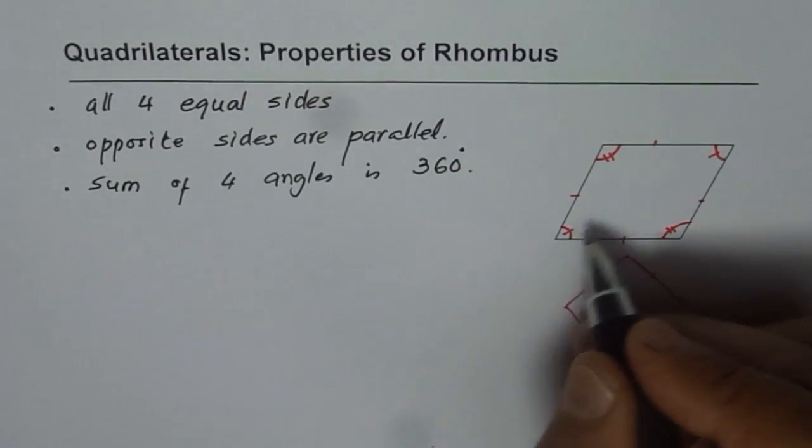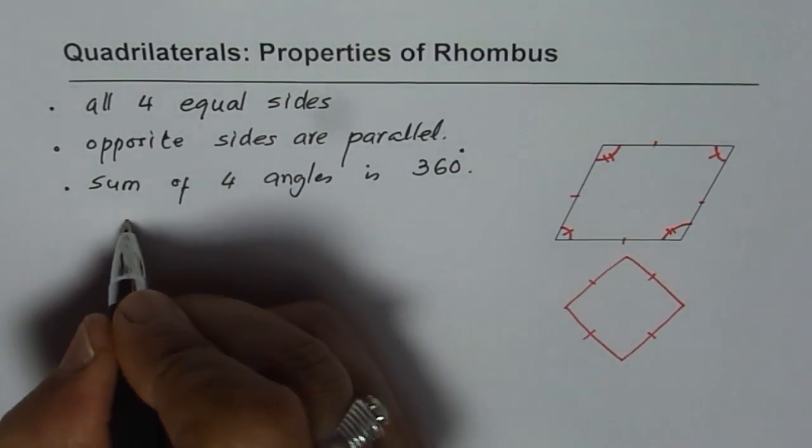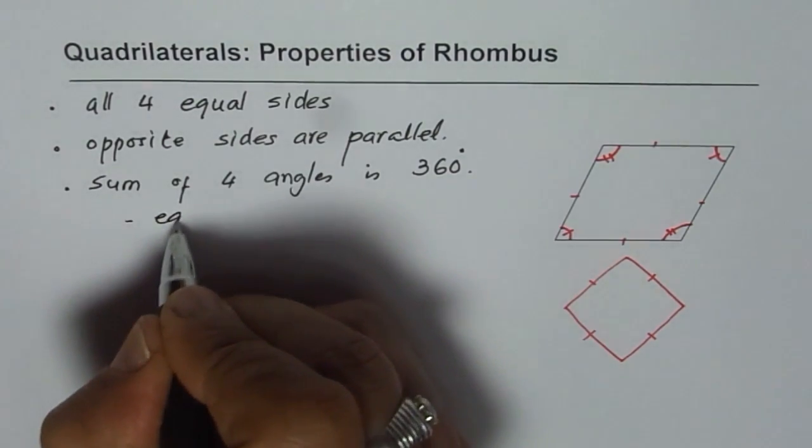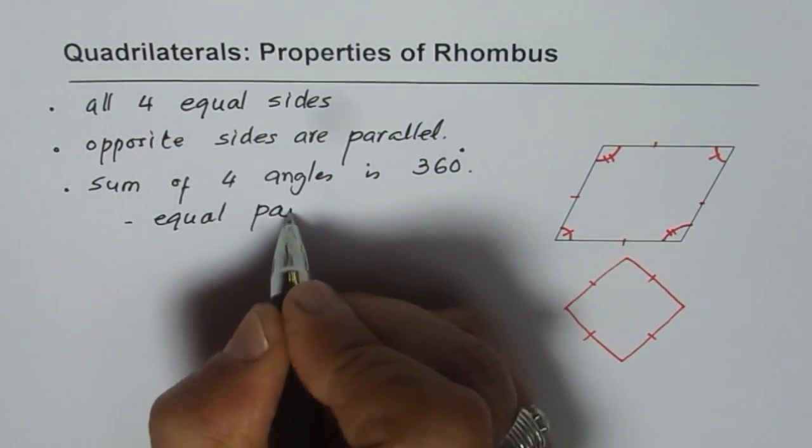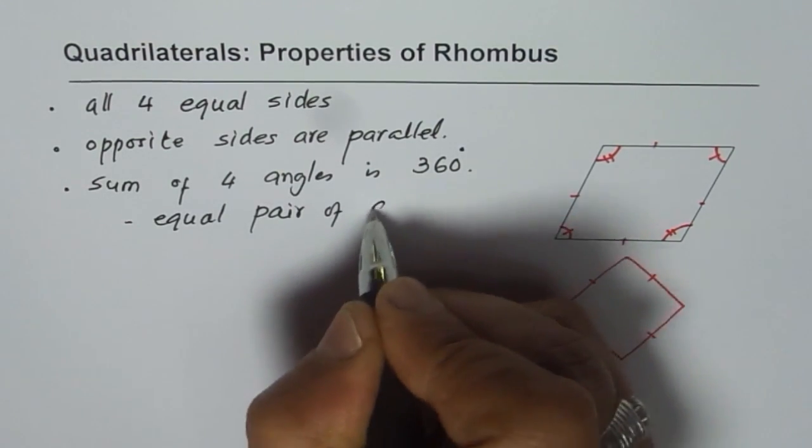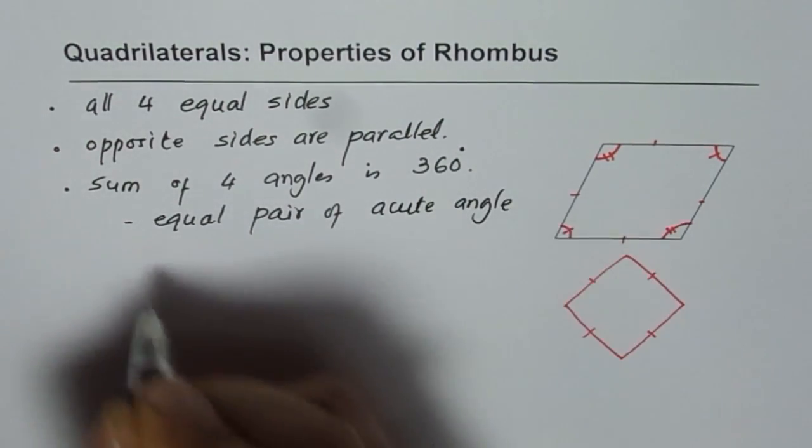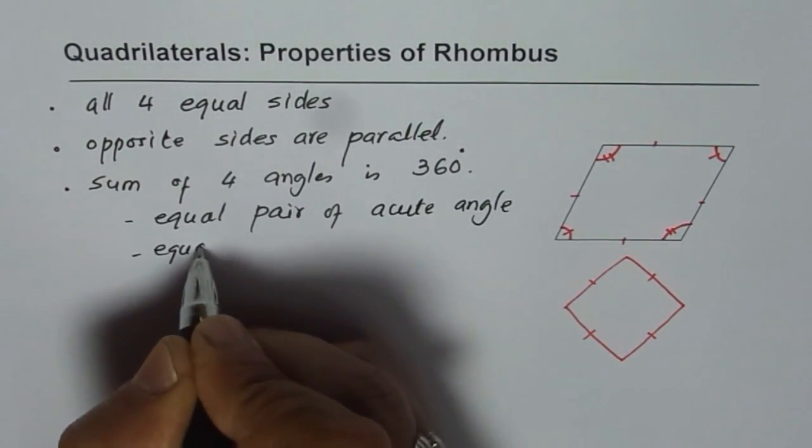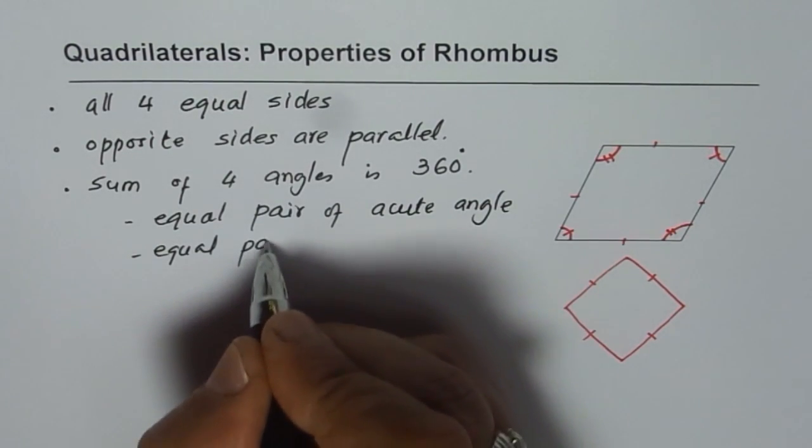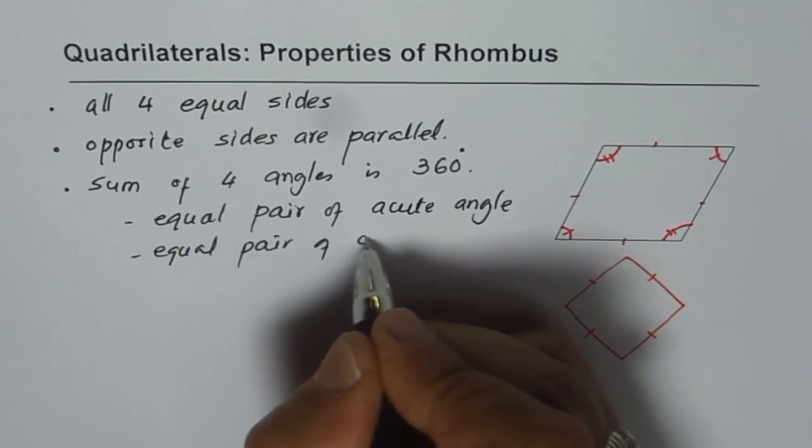But the opposite pairs are equal. So it has equal pair of acute angle and equal pair of obtuse angle.